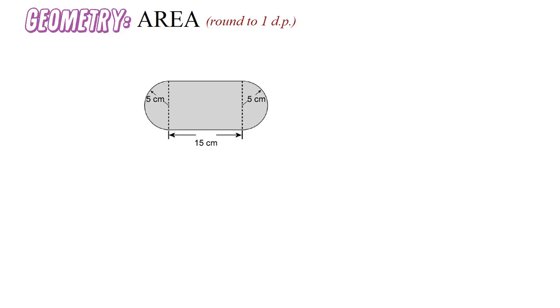We're given the task of finding the area of this compound shape. As you can see, it's made up of a rectangle and two semicircles, so essentially it's a circle because we have two halves of a circle. The first thing we should do is find the area of the rectangle—that's usually the easiest place to start.